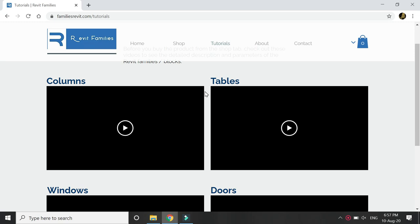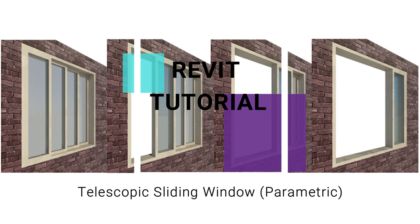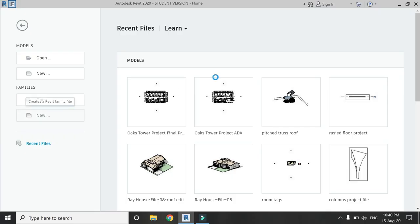The link of the website is given below in the description box. Now let's move towards our tutorial. Today's tutorial is about how to create a fully parametric telescopic sliding window in Revit. Before we start, please like and share my videos, leave a comment below, and subscribe to my channel. If you have any difficulty or query related to Revit you can ask me anytime.